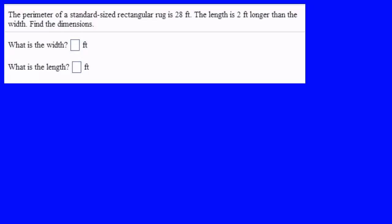Okay, let's start our first set of word problems, and these use the formulas we've just talked about. The perimeter of a standard sized rectangle is 28 feet. The length is 2 feet longer than the width. Find the dimensions.